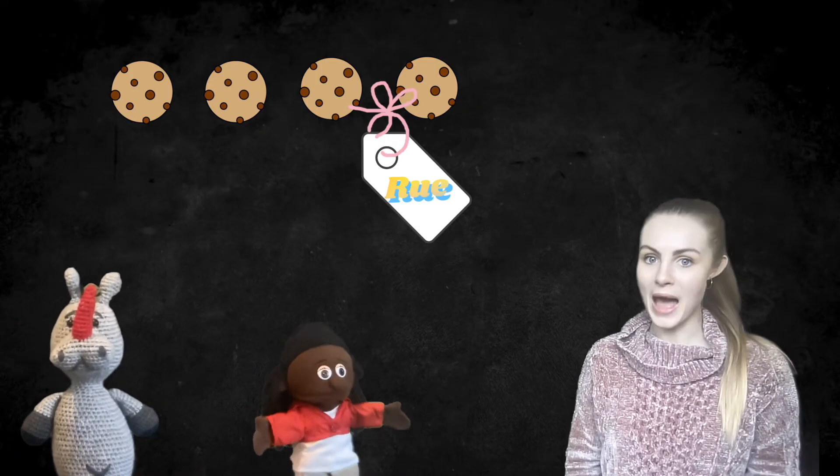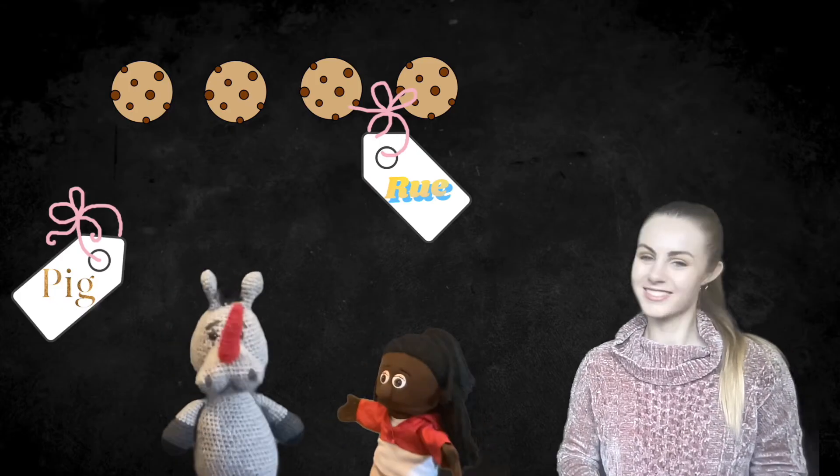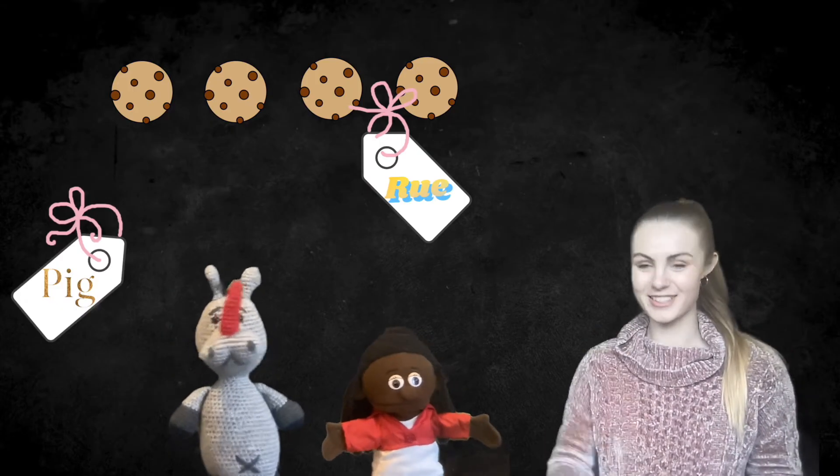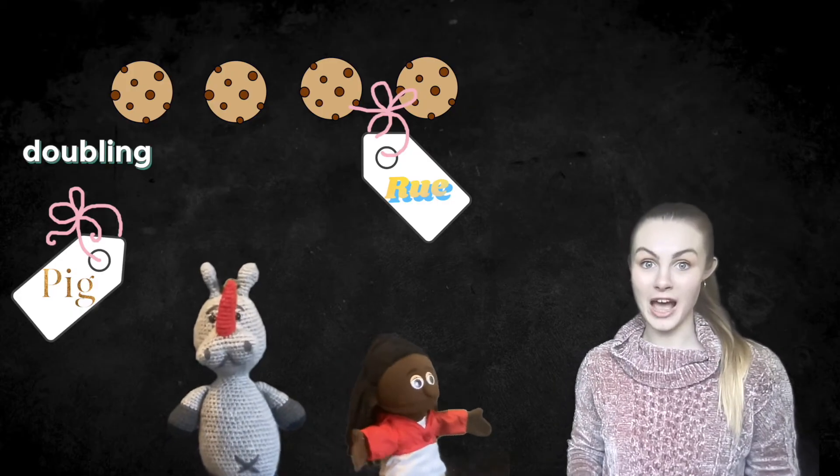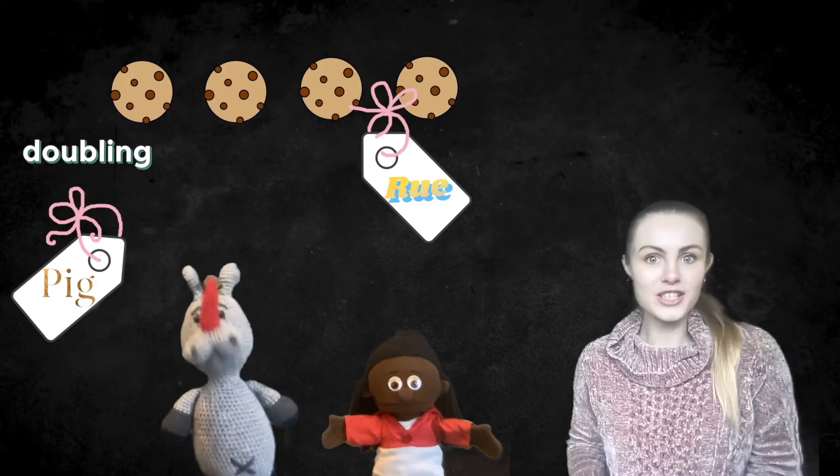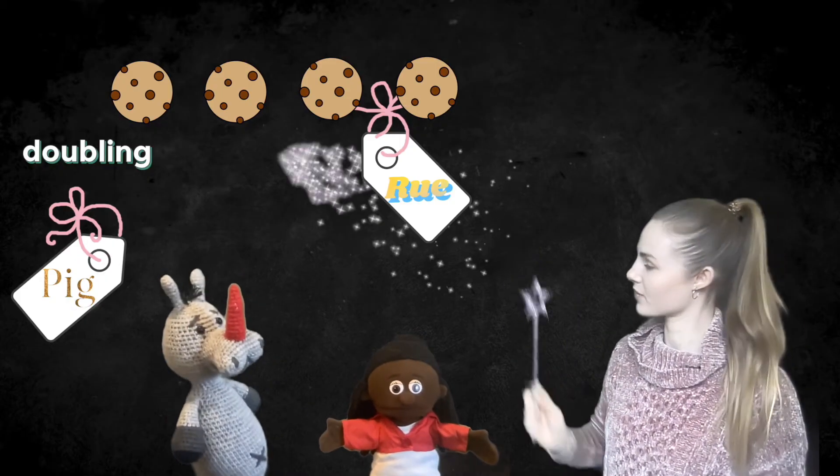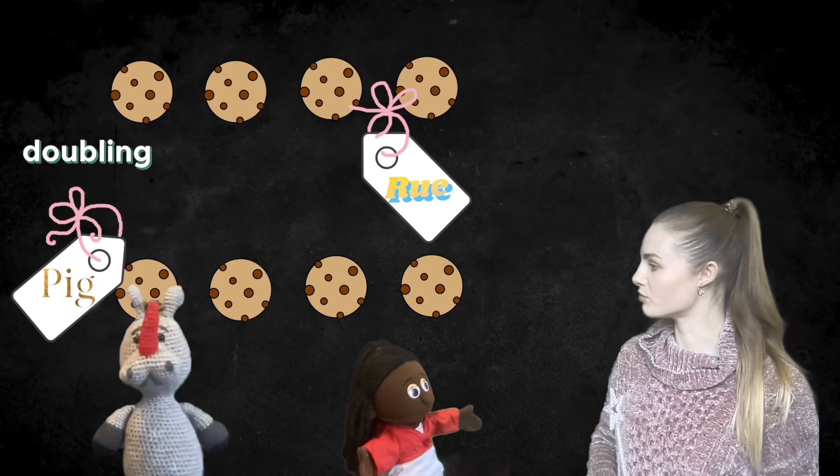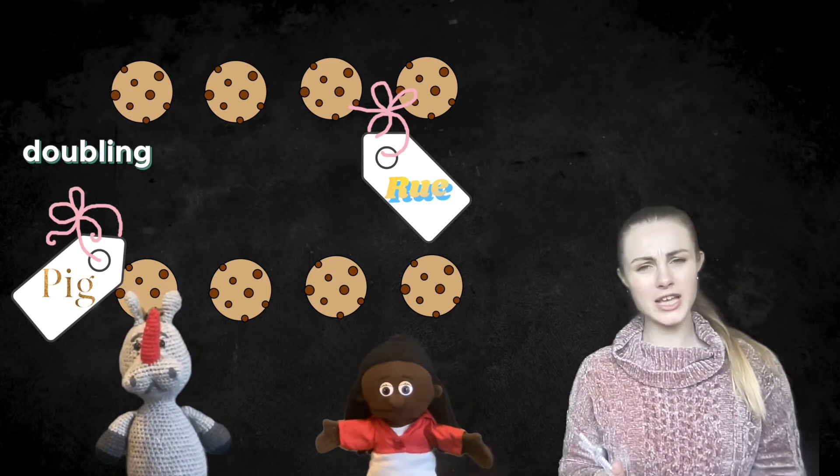We're back to Roo having four cookies and Grumpy, I mean Pig, having no cookies. This time we're going to double. So what we're going to do is we're going to have twice the amount of cookies as we started with. Ready? Pig, how many do you have? Four. Roo, four. They both have four.